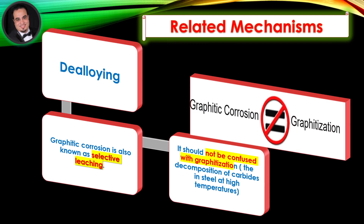Related mechanisms: Dealloying. Graphitic corrosion is also known as selective leaching. It should not be confused with graphitization, which is the decomposition of carbides in steel at high temperatures.